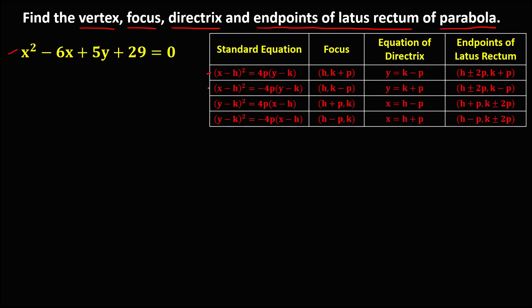These are the four standard equations. From the given equation, to rewrite it in standard form, these are the steps. First, the variable with exponent 2 must stay on the left side. Since x is the variable with exponent 2, all x terms must stay on the left side. So we have x squared minus 6x, and then the rest is transposed to the other side. This positive 5y transposed becomes negative 5y, and this positive 29 transposed becomes negative 29.